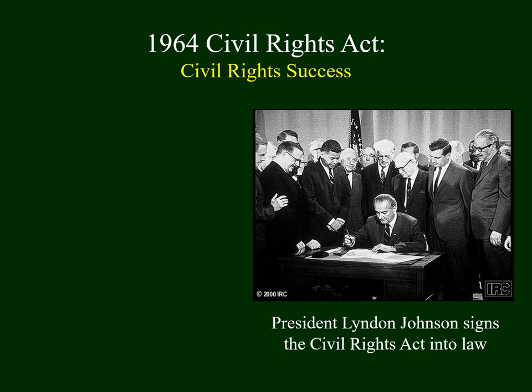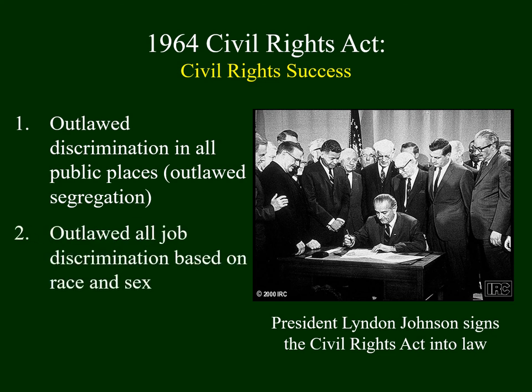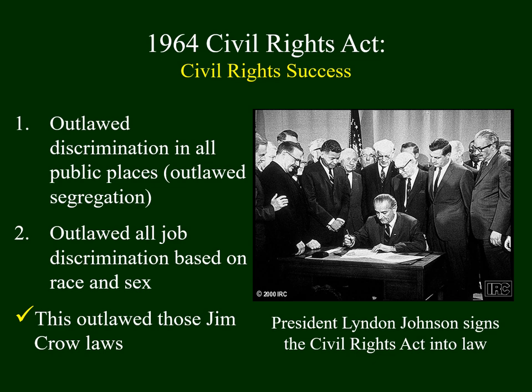Congress took action and passed the Civil Rights Act of 1964. This outlawed discrimination in all public places — essentially outlawing segregation. Secondly, it outlawed job discrimination based on race and sex. Lyndon Johnson signed the bill into law. What this did was finally outlaw those Jim Crow laws about 100 years after the end of the Civil War.